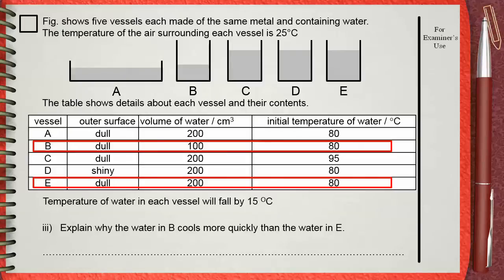Container B has only 100 cm³ of hot water, but container E contains 200 cm³ of water. This is double the amount. They have the same outer surface and the same initial temperature.